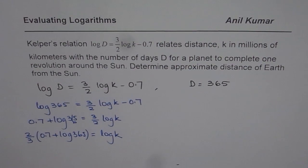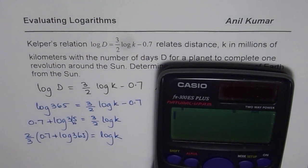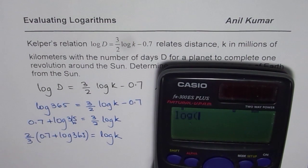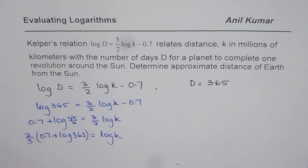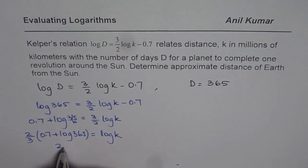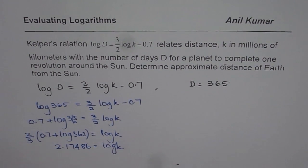So let's use the calculator to find the answer. We get log of 365, always base 10 if nothing else is mentioned. Plus 0.7, that gives us 3.26. We will multiply by 2 and then divide by 3. So that gives us 2.17486. 2.17486 equals log k.